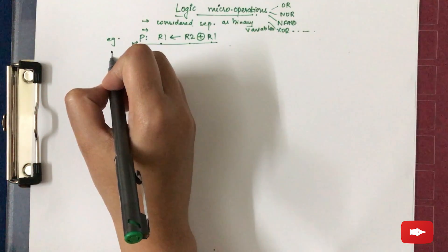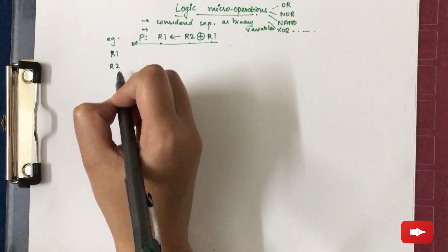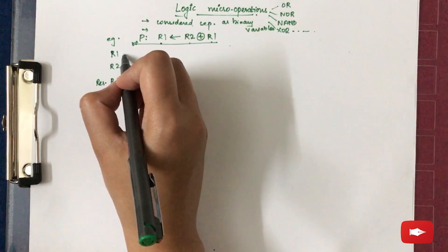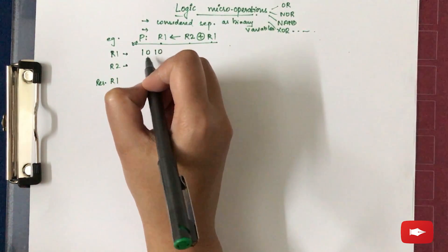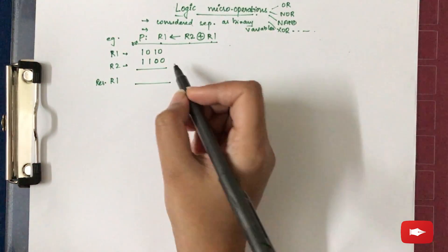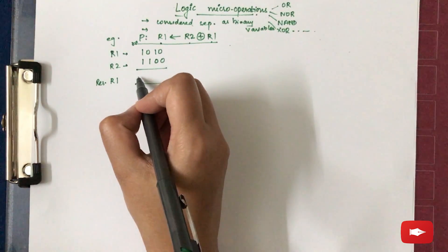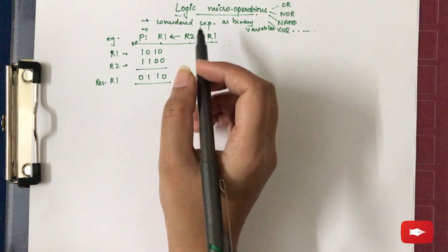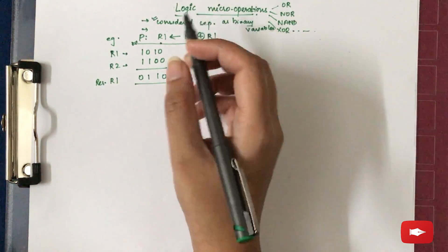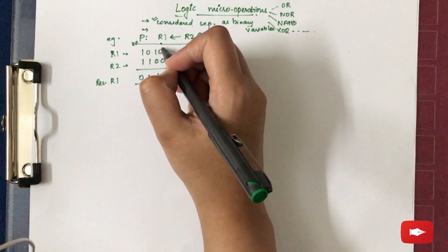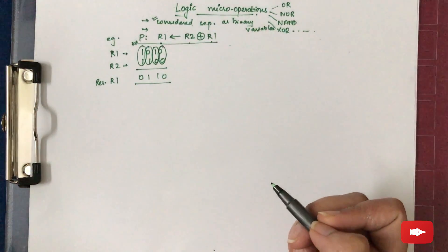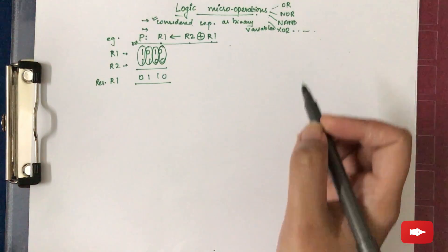Now representing this, we can write R1 ⊕ R2 with the result in R1. Let us take an example having R1 value to be 1010 and R2 value to be 1100. Now performing the EXOR micro operation between the two registers, we will get the result 0110. By saying considered every bit separately as binary variable means that this EXOR micro operation is performed individually among the two bits of these registers.